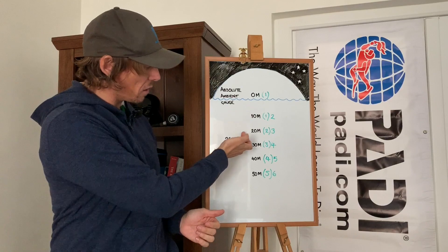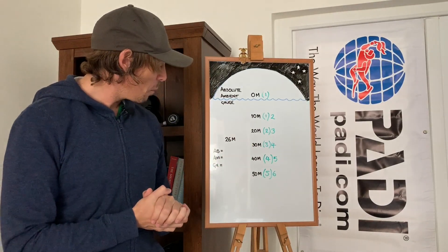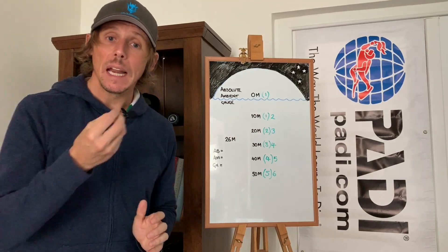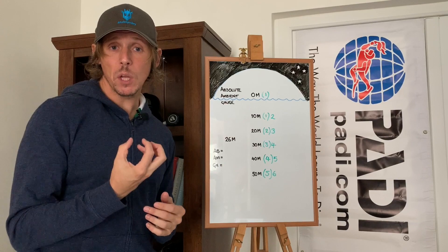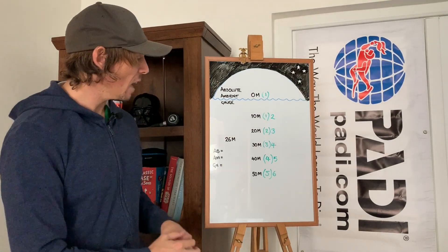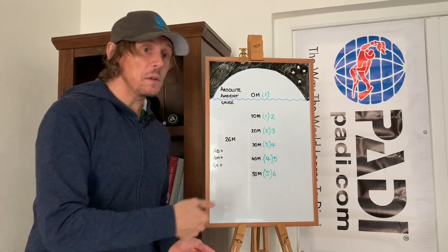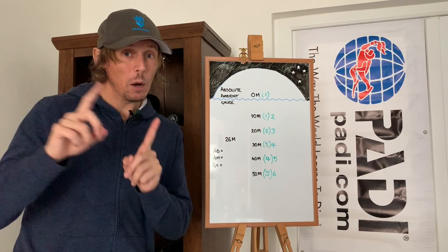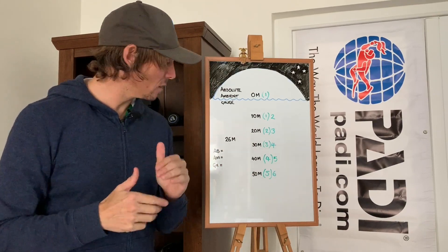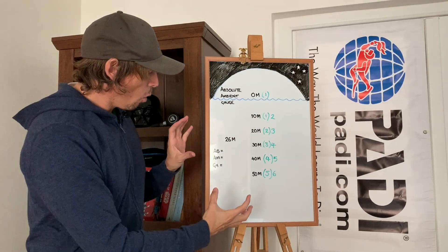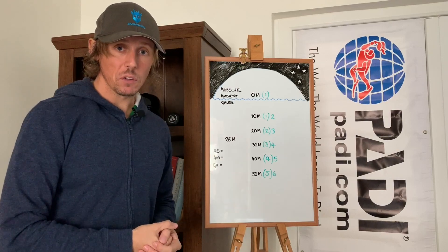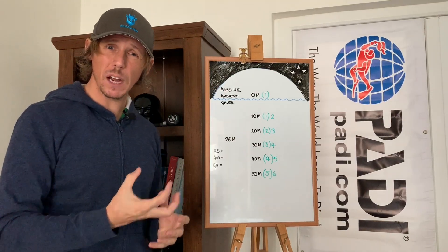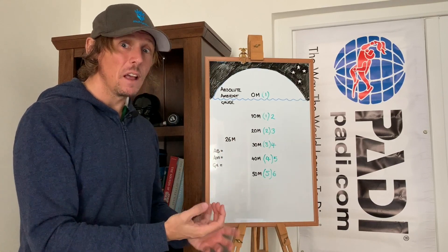My key piece of advice: whatever the depth is, always work the gauge pressure out first, then add the one if we're talking absolute or ambient. So for 26 meters — which lies between 20 and 30 — there is one atmosphere for every 10 meters, meaning 0.1 atmosphere per meter. So 26 meters represents a gauge pressure of 2.6. Work out the gauge pressure — the water pressure — first, then add one if necessary.